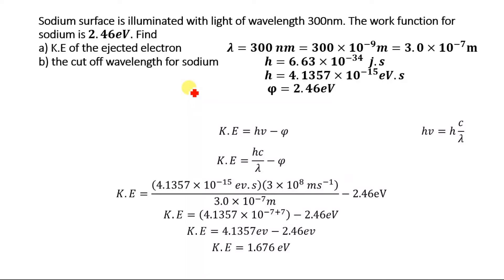Hello everyone, welcome to EasyEdu. Today we are going to solve this numerical from the second year physics book. According to the numerical, the sodium surface is illuminated with light of wavelength 300 nanometers. The work function for sodium is 2.46 electron volt, and we will determine the kinetic energy of the ejected electron and the cutoff wavelength for the sodium atom.